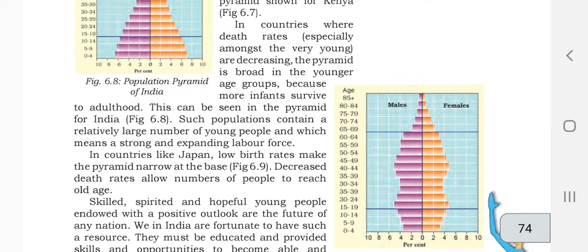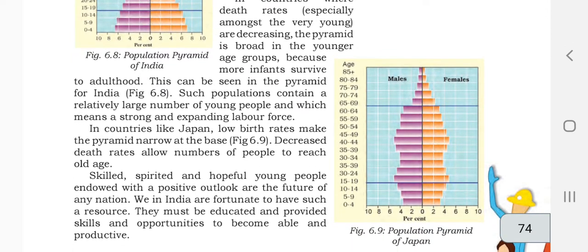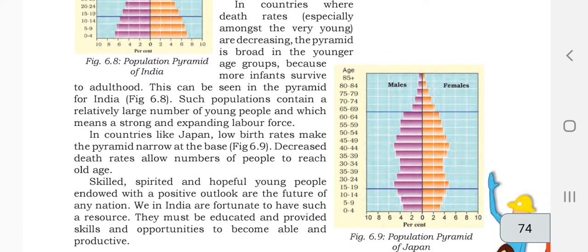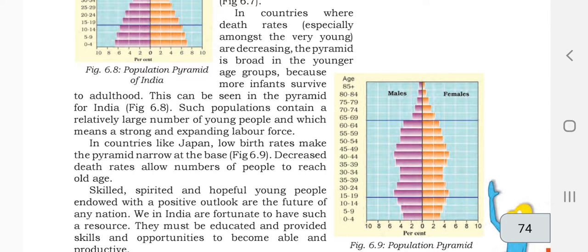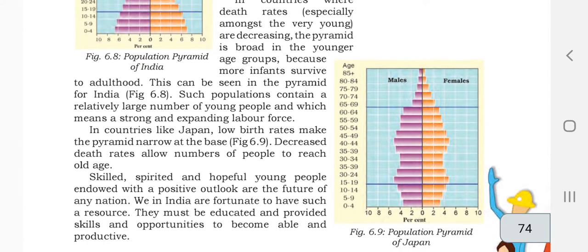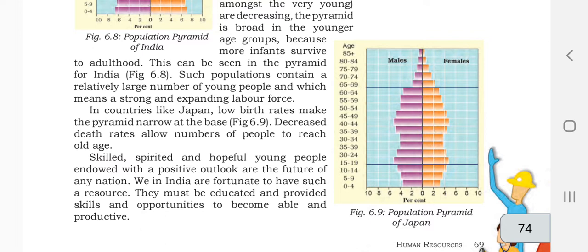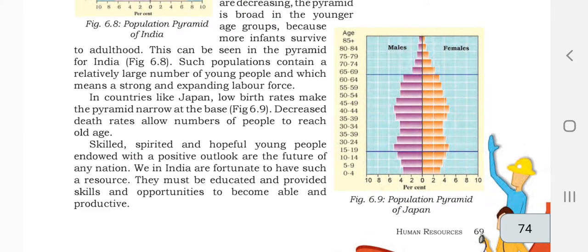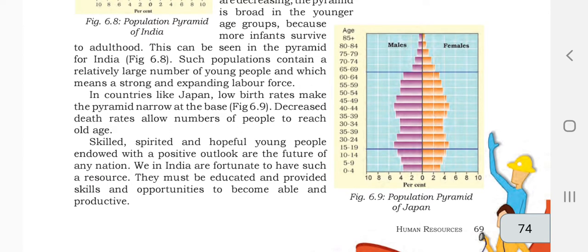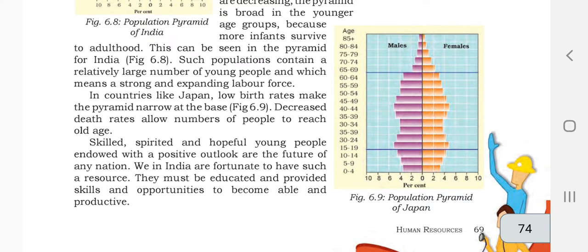In countries where death rates, especially amongst the very young, are decreasing, the pyramid is broad in the younger age group because more infants survive. Such a population contains a relatively large number of young people, which means a strong and expanding labor force. In countries like Japan, low birth rates make the pyramid narrow at the base, and decreasing death rates allow more people to reach old age.